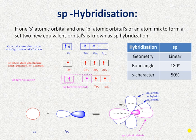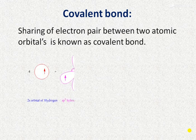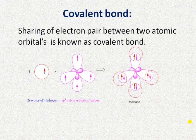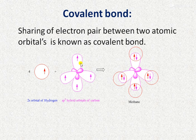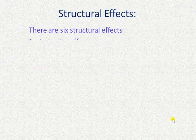The sp hybrid carbon atom can thus form a carbon-carbon triple bond. A covalent bond involves the sharing of an electron pair between two atomic orbitals. For example, in methane formation, sp3 hybrid orbitals of carbon, each carrying one electron, overlap with the 1s atomic orbitals of four hydrogen atoms to form the methane molecule.